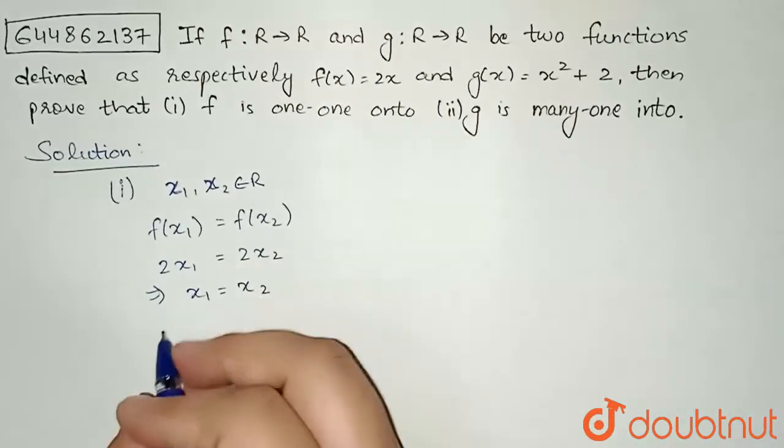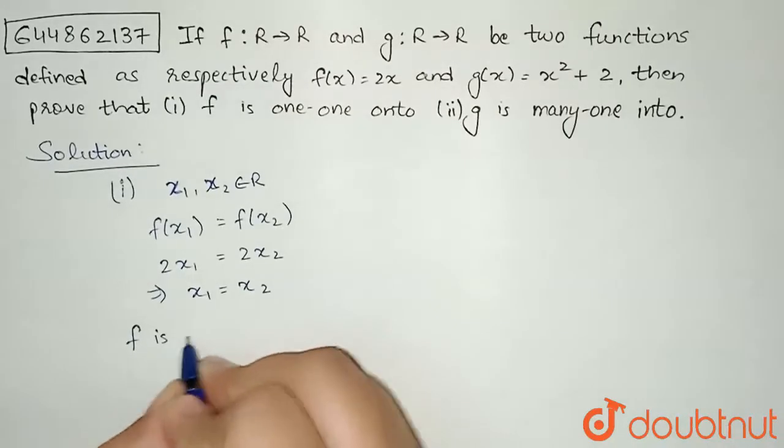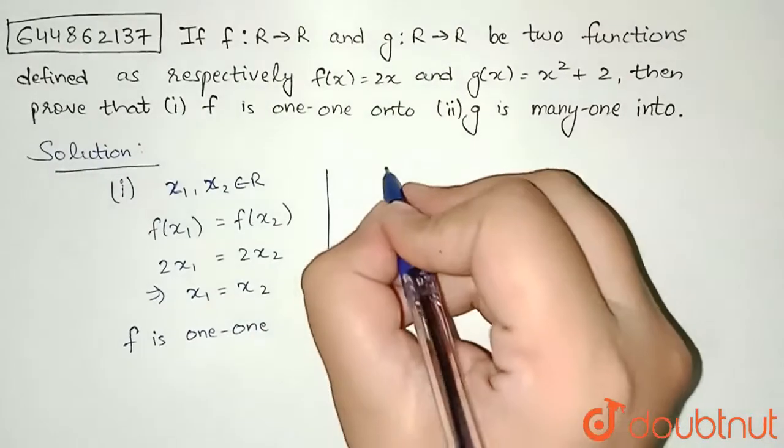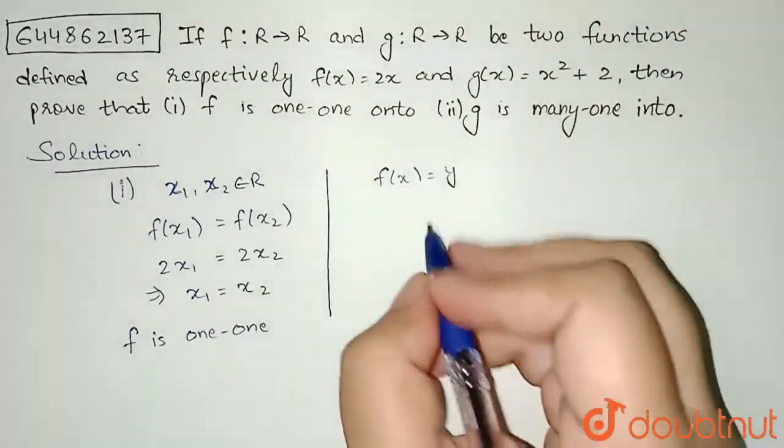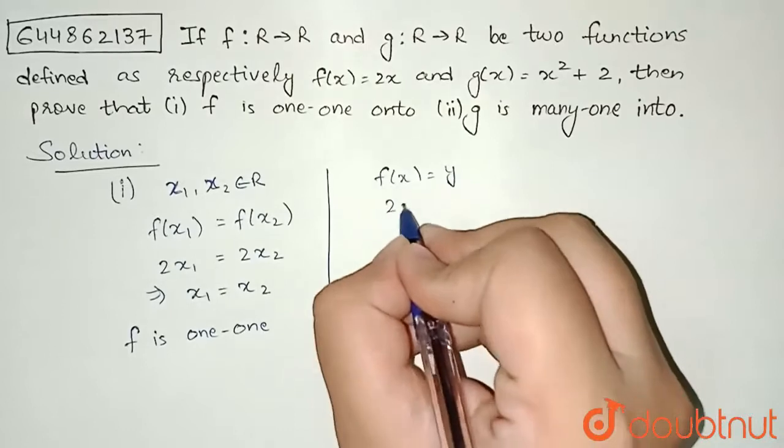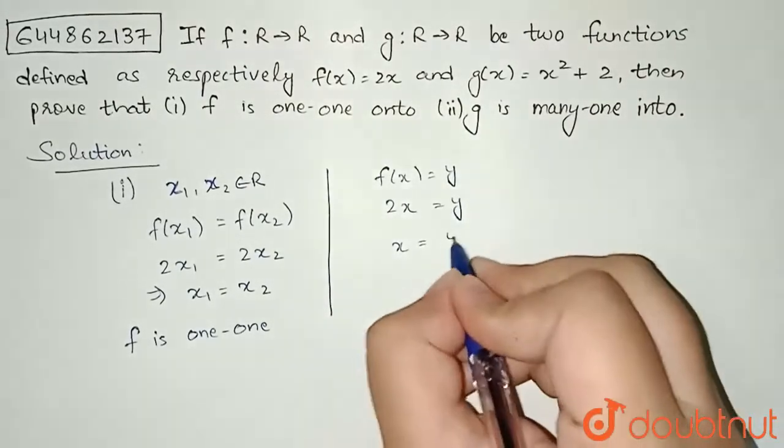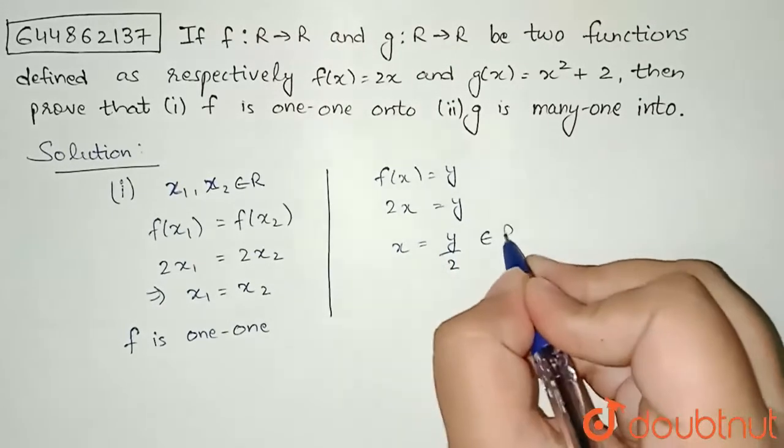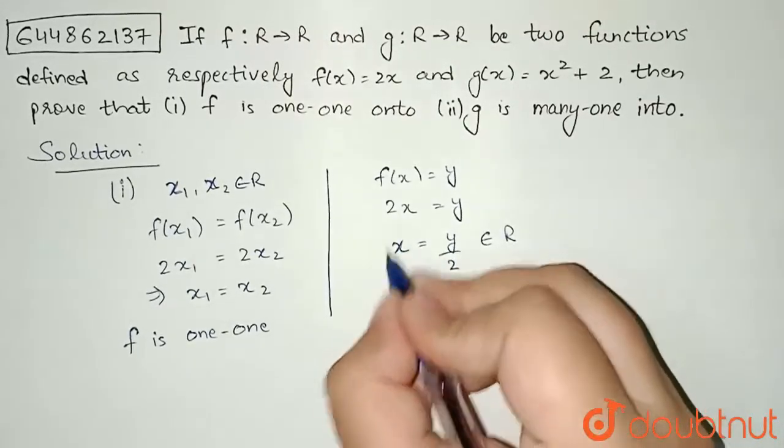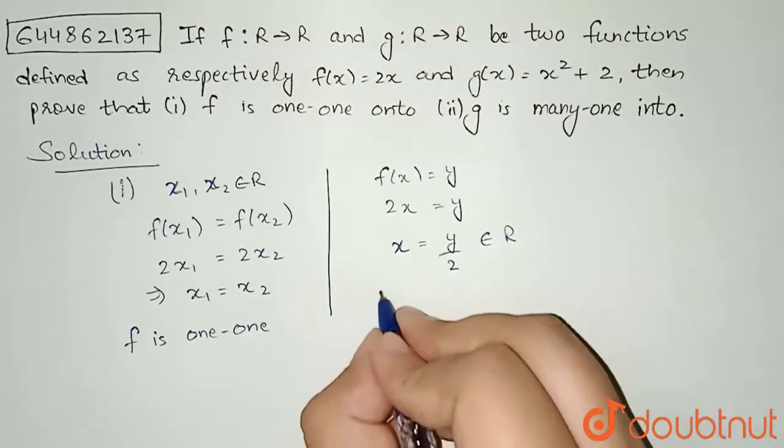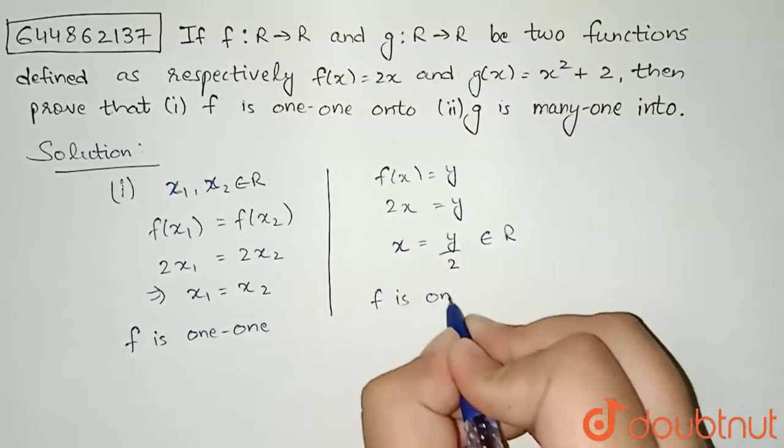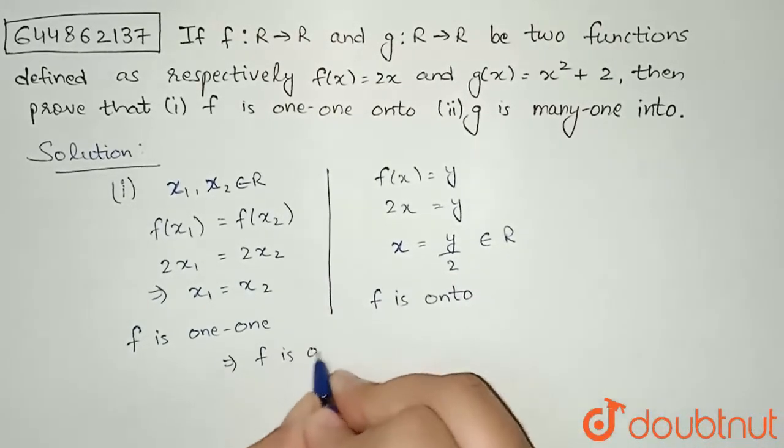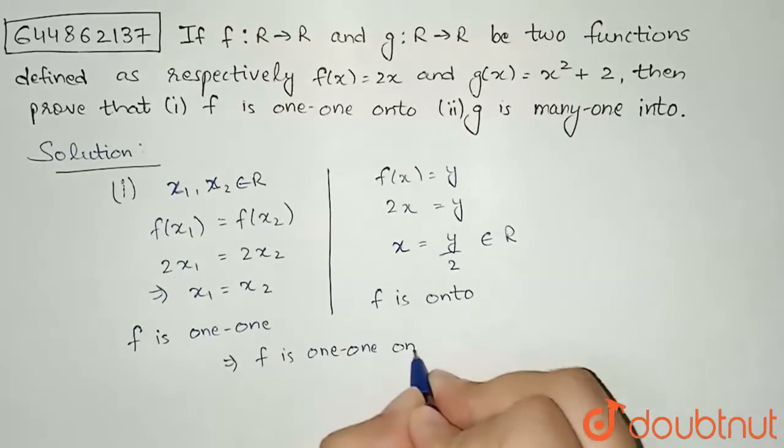Now for onto, what I can consider: f(x) = y. So f(x) value is 2x, that is equal to y, and x I will get y/2. See, x belongs to real, so y/2 will also belong to real for all the acceptable values of x. So I can write that my function f is onto as well. So finally I can conclude that f is one-one as well as onto, hence proved.